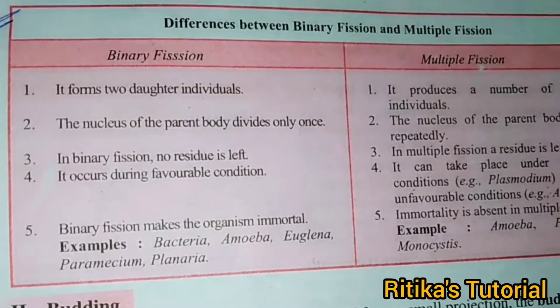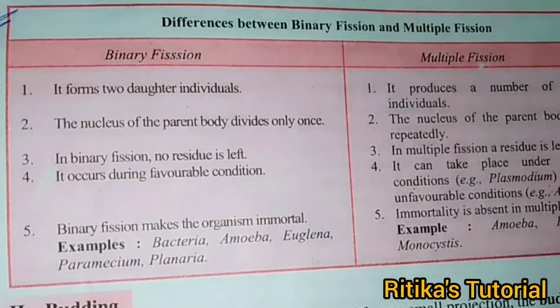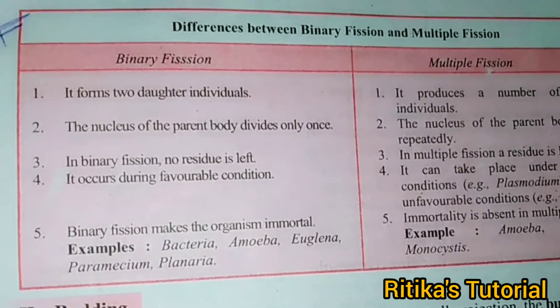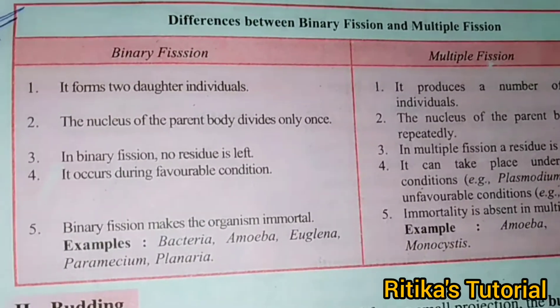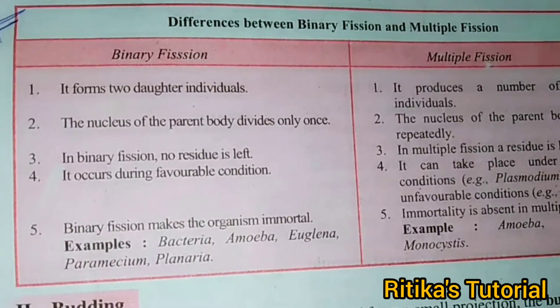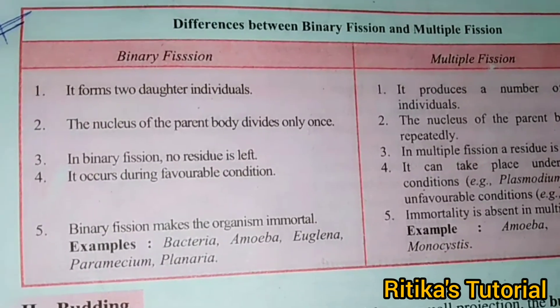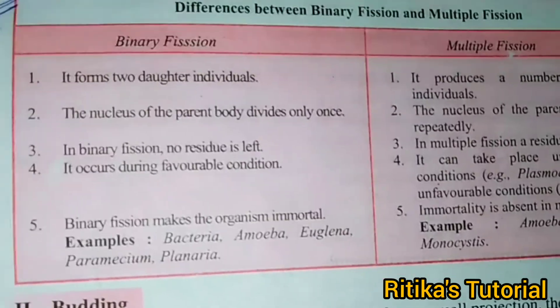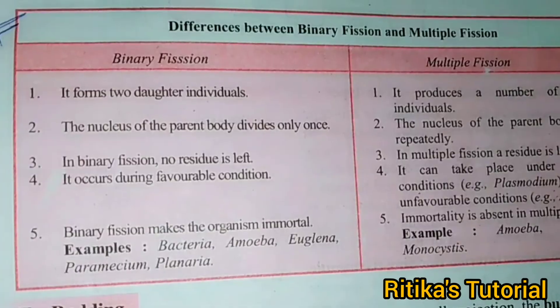Other examples include Monocysts and Amoeba. Notably, Amoeba can undergo both binary fission as well as multiple fission, so it falls under both categories. Thanks for watching, friends.